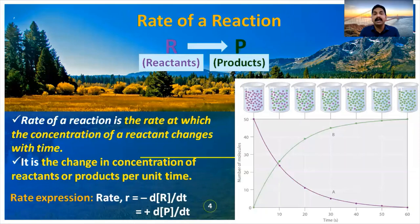Here, dt means per unit time. So the change in concentration of reactants or products per unit time is called the rate of reaction. Rate of reaction is the decrease in concentration of reactants or the increase in concentration of products per unit time.